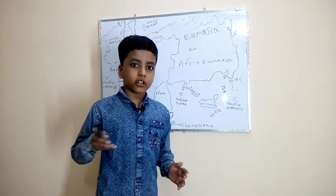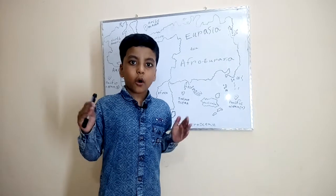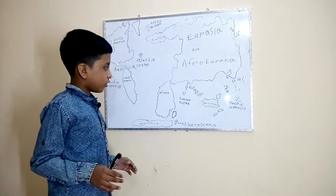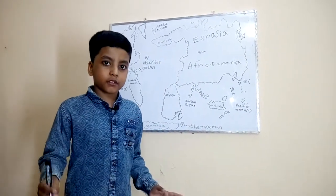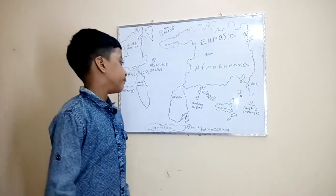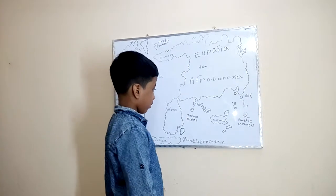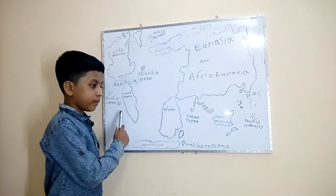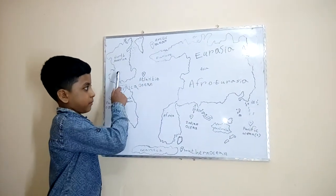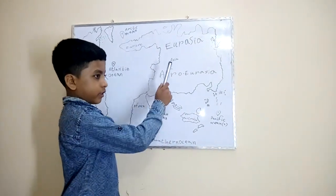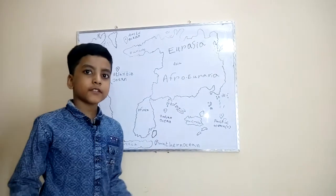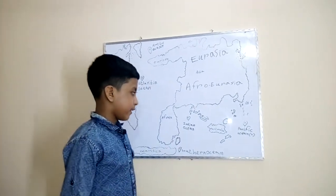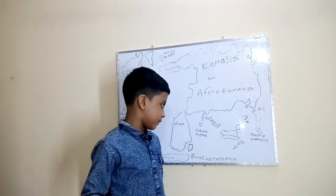Hello viewers, I'm going to start a topic called the Earth's continents and oceans and supercontinents. So let's start with the continents because they're the simplest thing. The continents on Earth are Australia, Europe, Antarctica, South America, North America, Africa, and Asia. Let's start with the smallest continent of all, which is also called a country, and that is — yep, you guessed it — Australia.